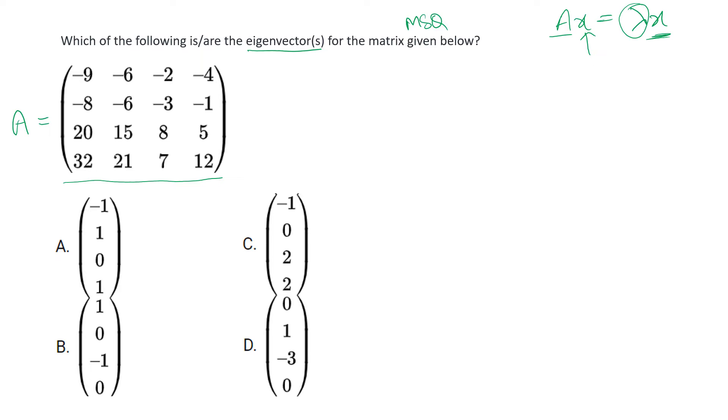Considering A to be our matrix, we can substitute all the given options in place of x. If the result is the same column matrix x with some constant lambda, then we can conclude that the given option is one of its eigenvectors. Let us follow this property and check which are the correct options.